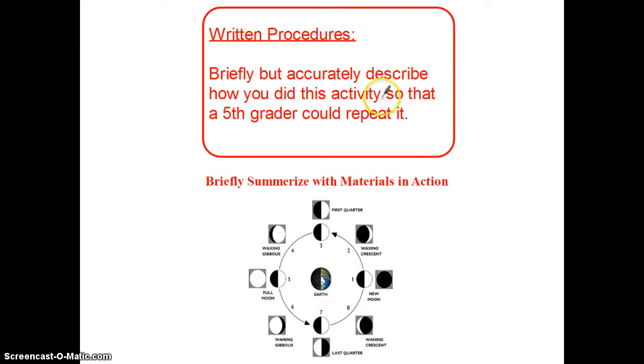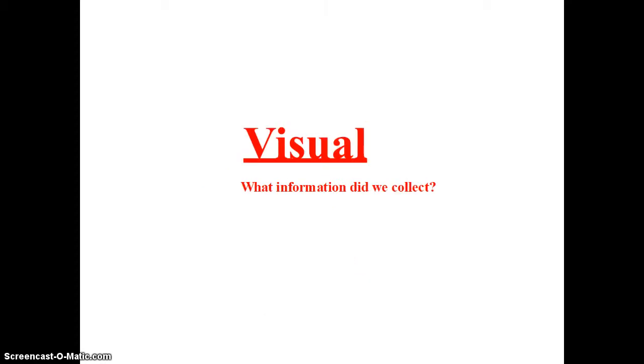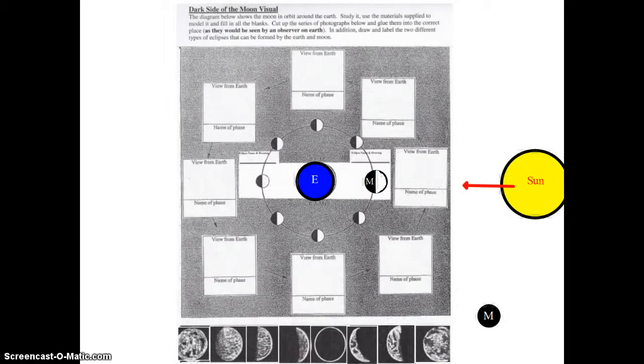In the procedures, we'll just go over how that's done, but basically, we always try to briefly but accurately describe how this activity was done. So the fifth grader could repeat it, you give a basic summary of the materials we used. In this case, it was a model, as well as the visual section, and the visual looked a bit like this.